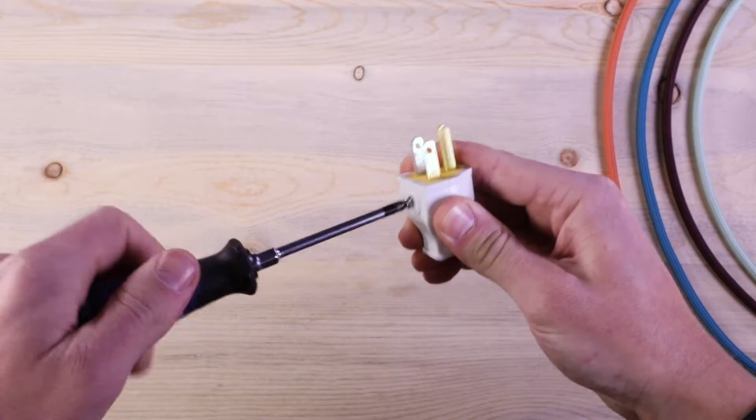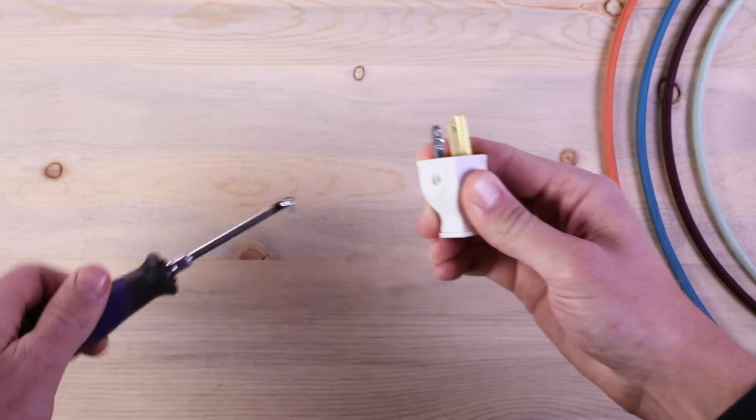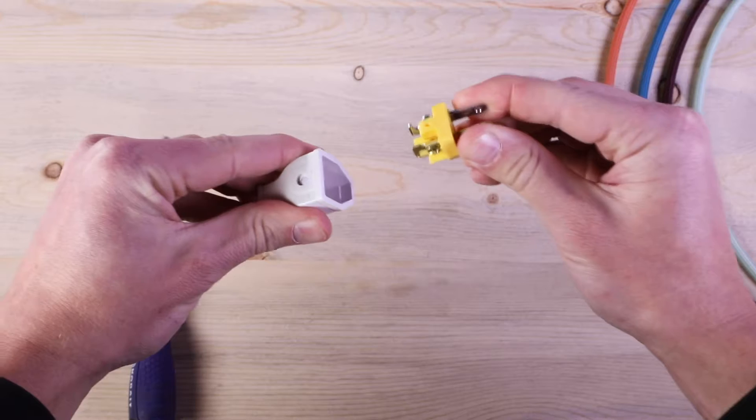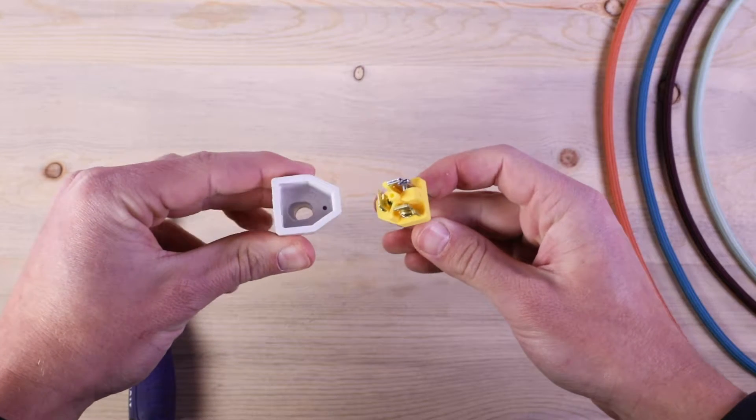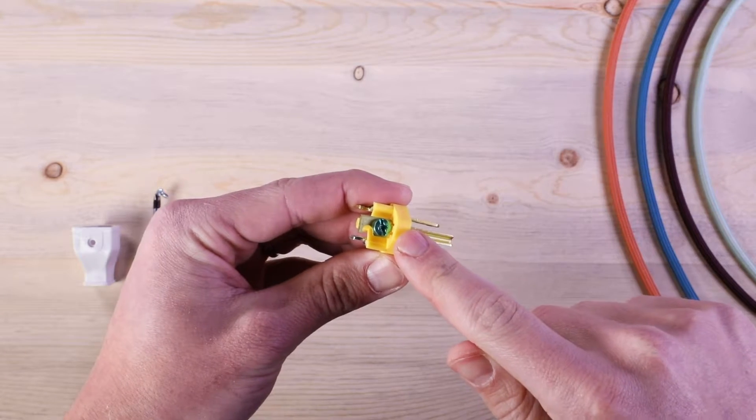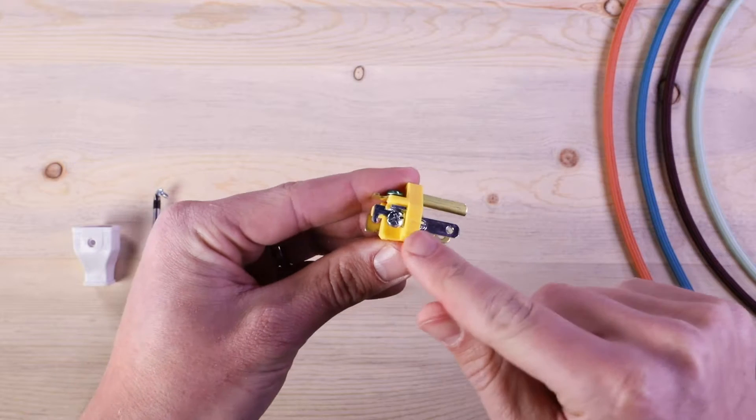The first step is to remove the set screw to separate the blades from the plug housing. Once the screw is removed, simply pull the blades out of the plug housing. Looking at the blades, you will see three terminals: green ground, gold positive, and silver negative.